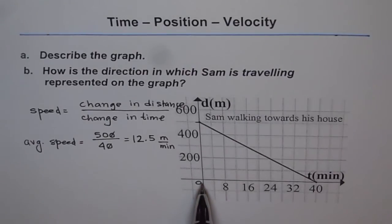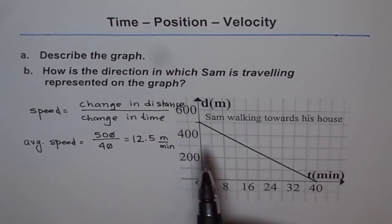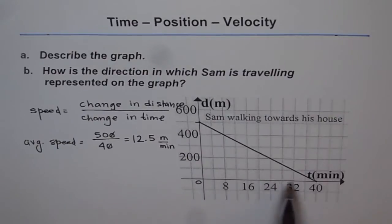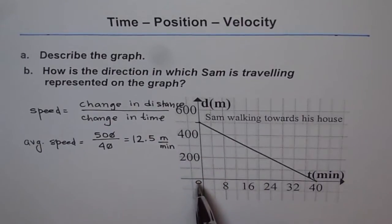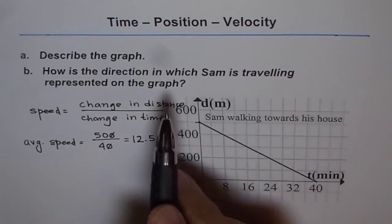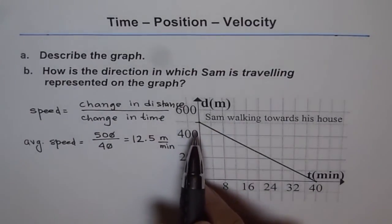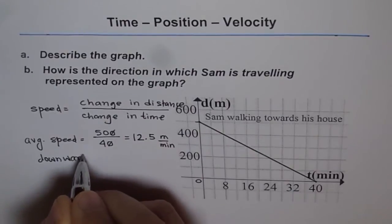You can see that as time goes by — 0, 4, 8, 16, 24, 32, 40 — distance is decreasing from 500, 400, 200 to 0. So as the independent variable time increases, the dependent variable distance decreases. We can see that the direction is towards the house. So if your line is sloping downwards, then the object is approaching. Direction of Sam's travel is represented on the graph by a slanting line going downwards — downwards represents approaching.